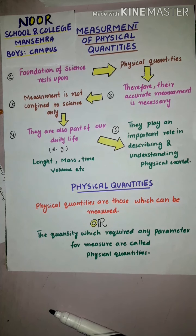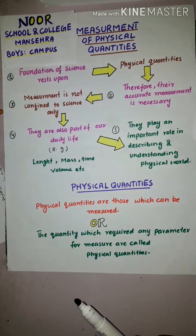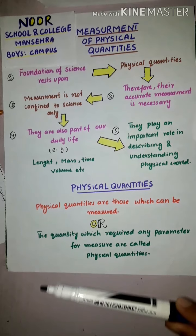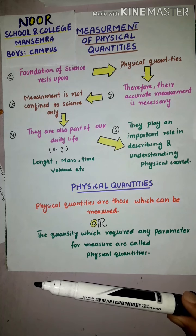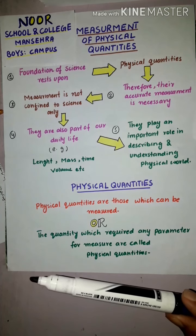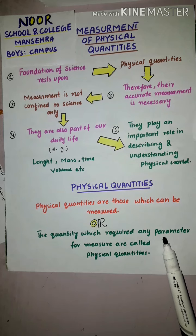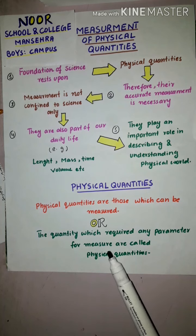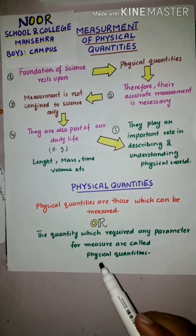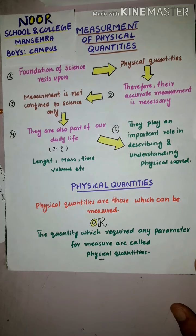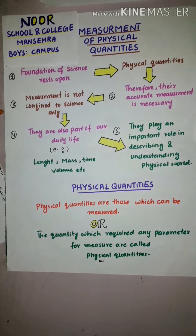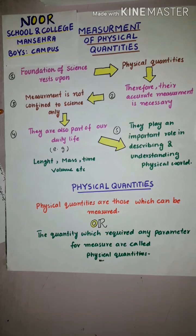Those quantities which require some parameter for their measurement are called physical quantities. For example, if I want to measure this marker, I will need some parameter — some scale or something to compare it with. Any quantity that can be measured with the help of a parameter is called a physical quantity. Physical quantities are those which can be easily measured.